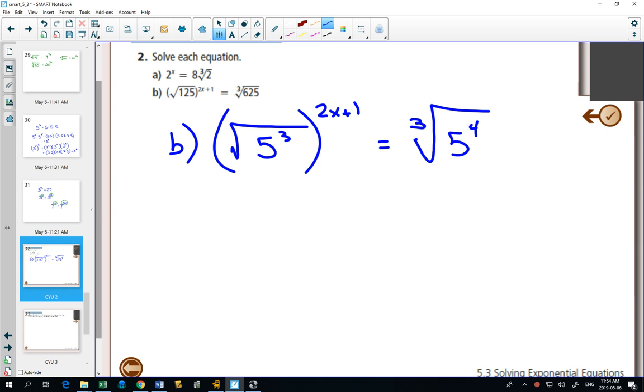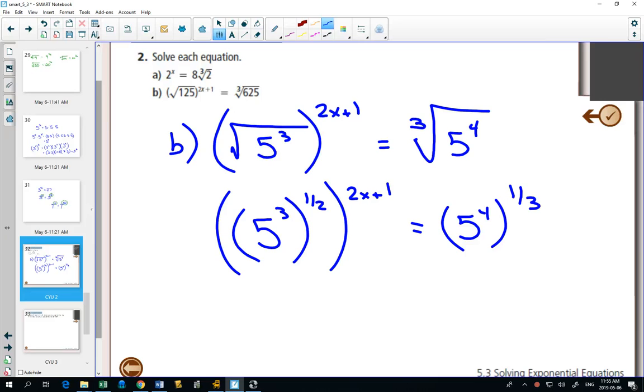625 is 5 to the 4. And I'm taking my time because there's a lot of exponent rules here. And sometimes, if you try to do too many exponent rules at once, you make catastrophic errors. So what do I do with the square root? It's the same as a half. So I would have 5 to the 3 to the half, and then this to the 2x plus 1. And on this side, cube root is the 1 3rd.